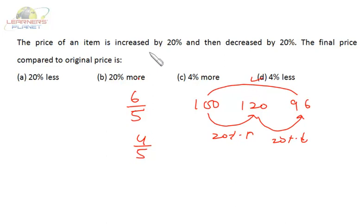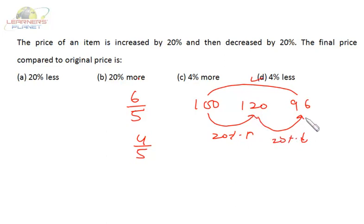Generally what students do is they see the price is increasing by 20% and then decreasing by 20% and assume there is no impact. But we must be very clear that in both cases the base is different. In the first case the base is 100 on which the price increases by 20%. In the second case the base is 120 on which the price decreases by 20%. So overall we are getting a 4% decrement from the initial value.